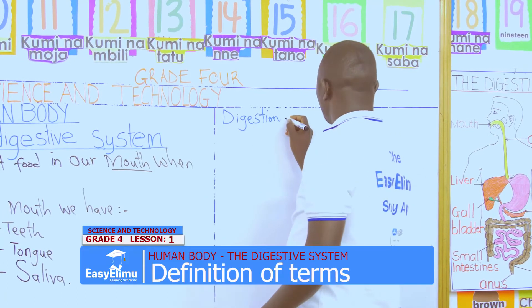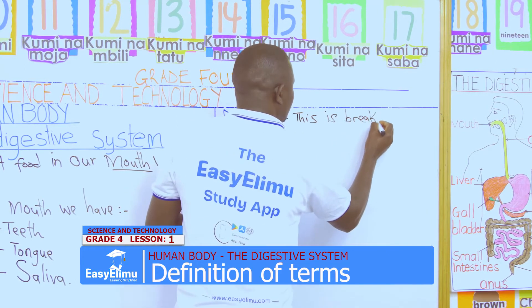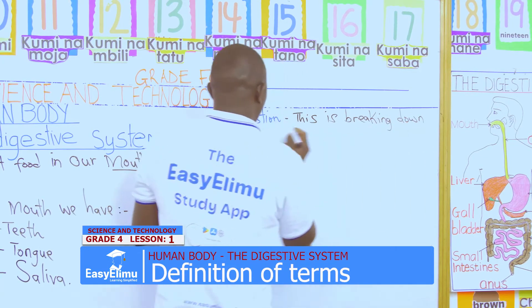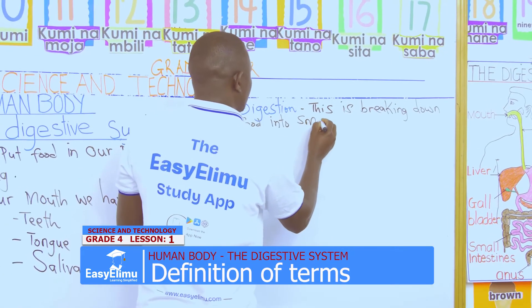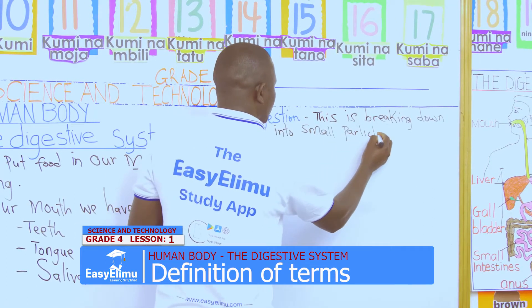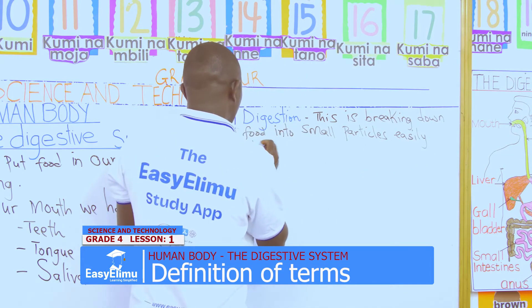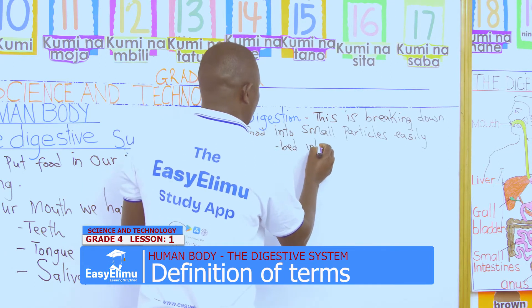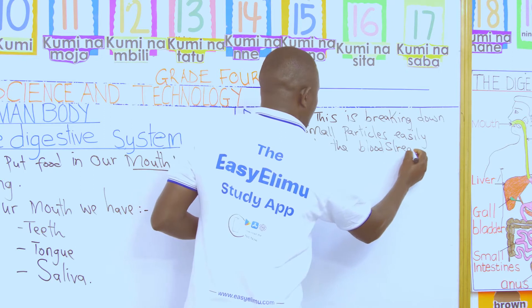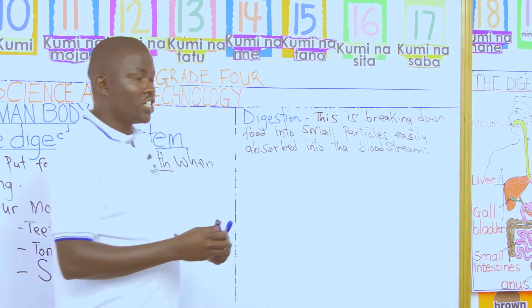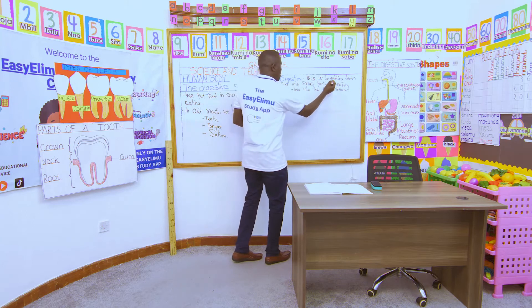Digestion is breaking down food into small particles easily absorbed into the bloodstream. From the dictionary, we say digestion is breaking down food into small particles which are easily absorbed into our bloodstream.